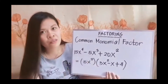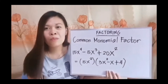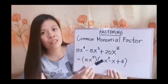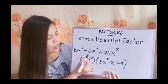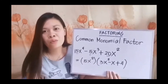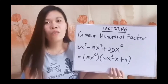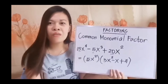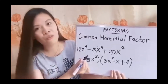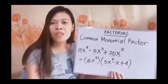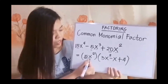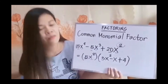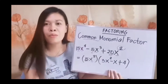Let us consider the three terms. First, consider the numerical coefficients: we have 15, 5, and 20. The common factor among 15, 5, and 20 is 5. After considering the numerical coefficients, we look at the literal coefficients: we have x to the 4th, x cubed, and x squared. What is common is the variable x, and we take the lowest exponent, which is 2. So we have x squared. Therefore, 5x squared is our common monomial factor.